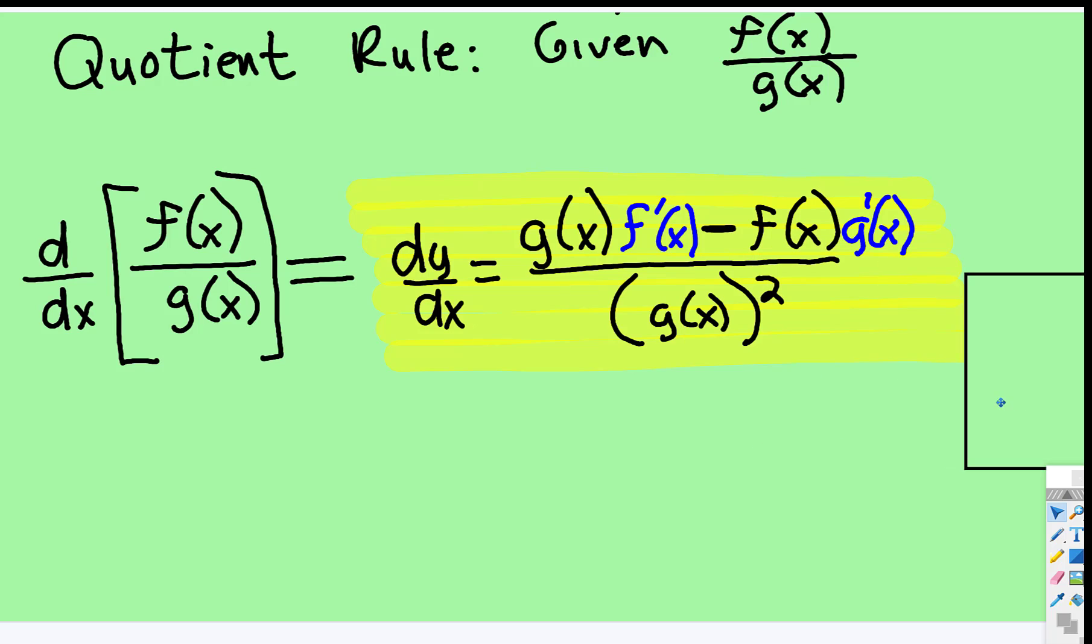The rule says you take the original g times the derivative of f, then you subtract the original f times the derivative of g.